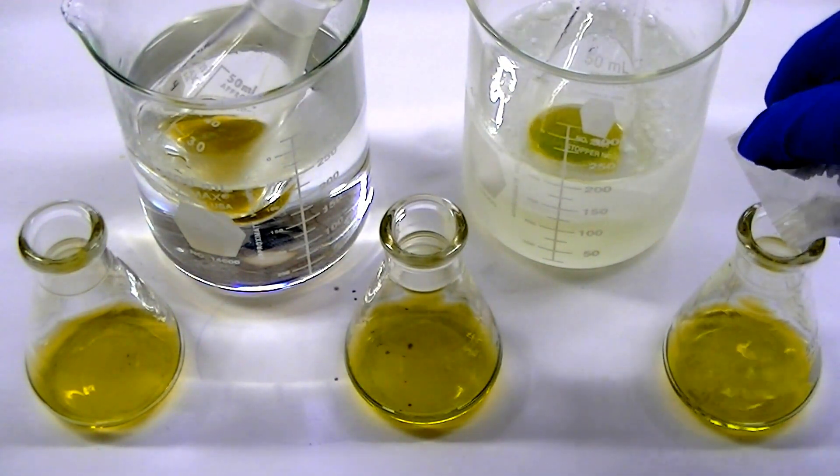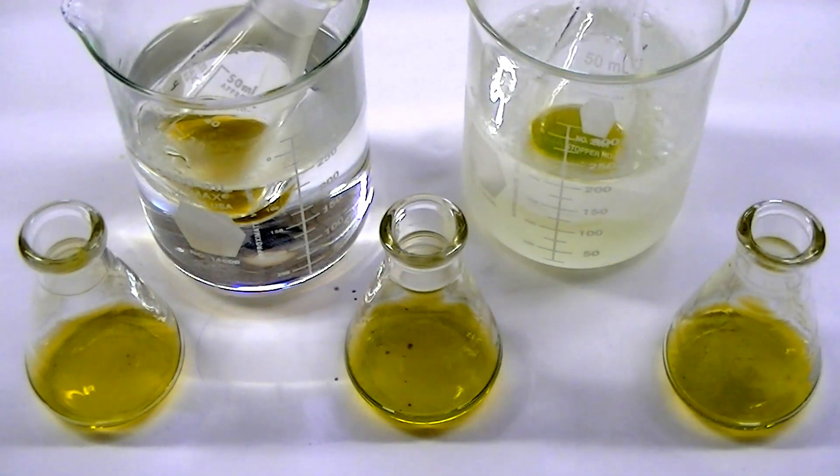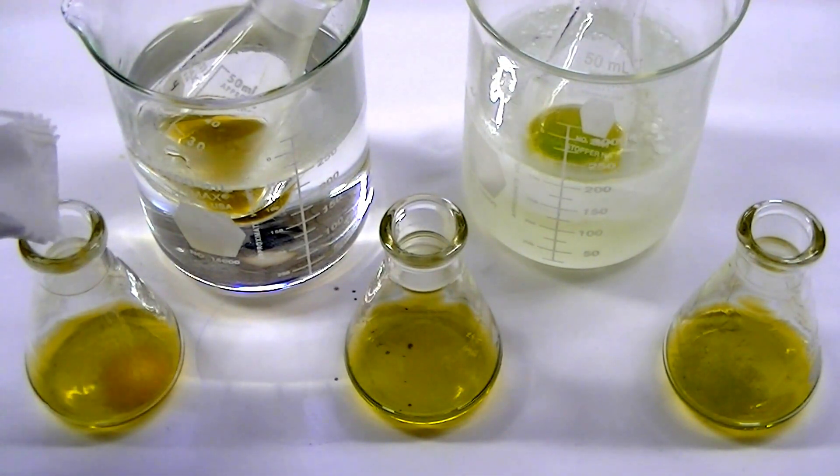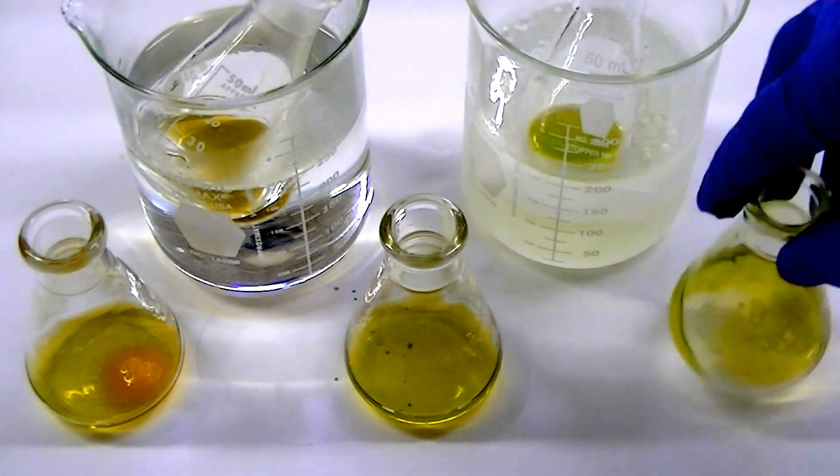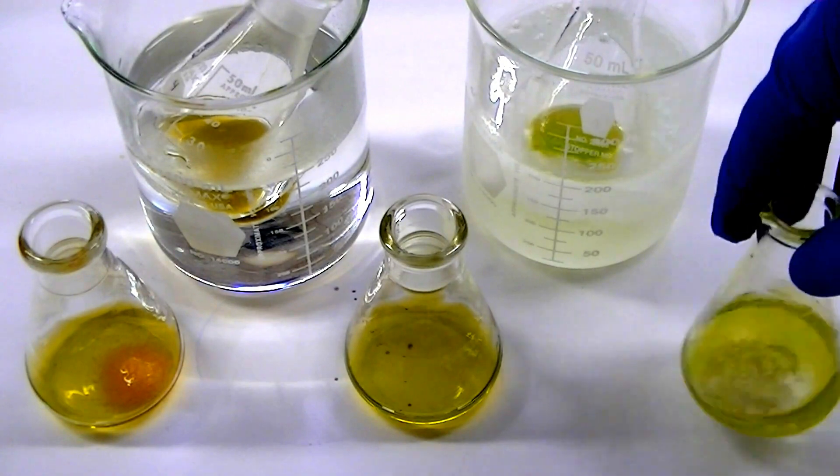To generate a blue color, we'll just add some silver nitrate. To get an orange color, we'll add a little bit of table salt. Let's describe the effect of addition of silver nitrate first.